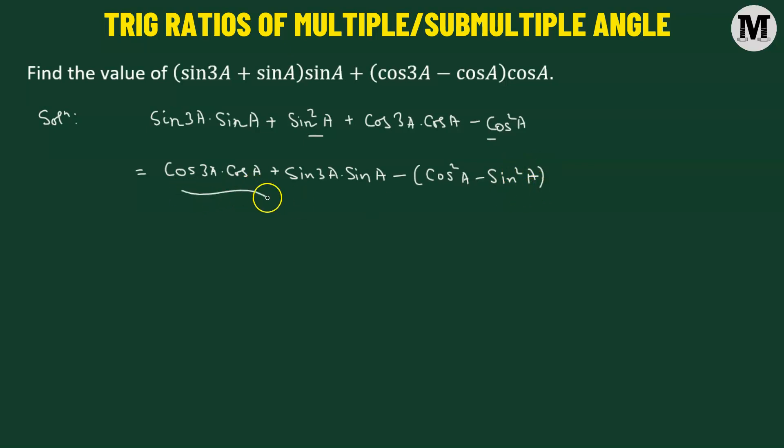Now what we have here is a standard formula. So this can be combined to get cosine of 3A minus A. Minus, now cosine squared A minus sine squared A, that's a standard formula as well. That's cosine of 2A. That's going to give us cosine of angle 2A minus cosine of angle 2A which will be equals to 0. So that means the value of the given trig expression comes out to be 0.